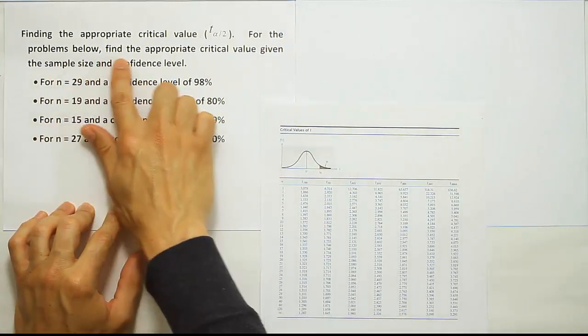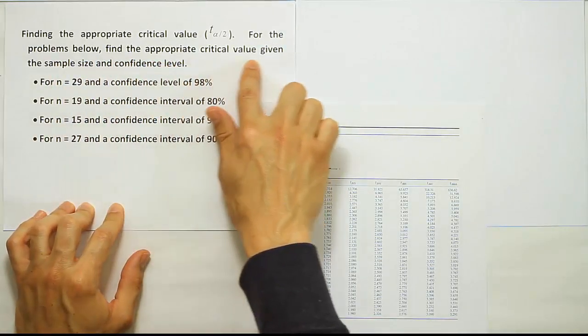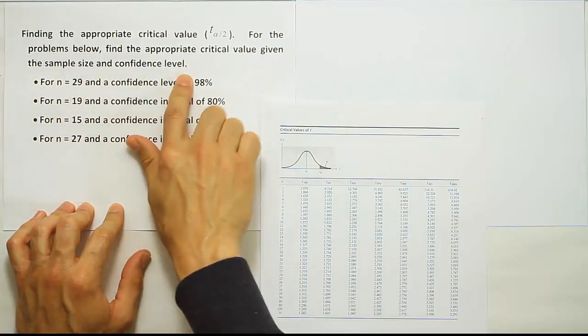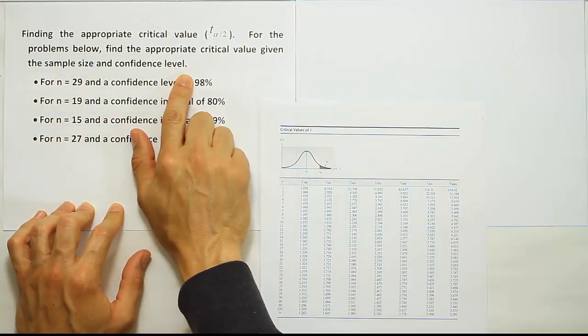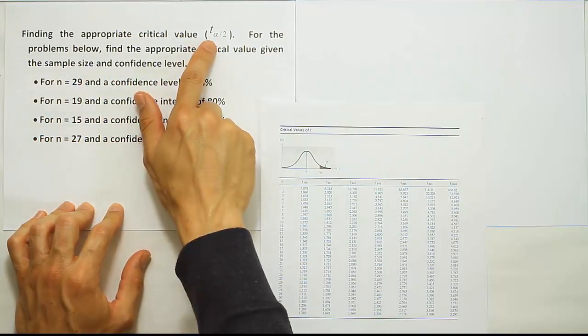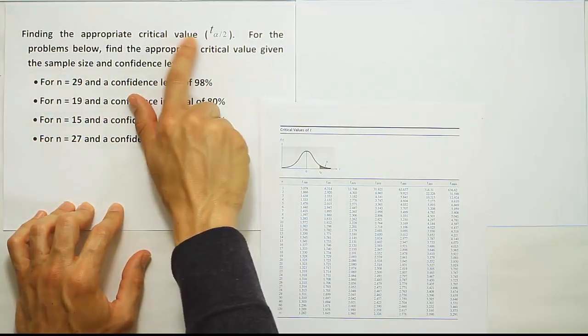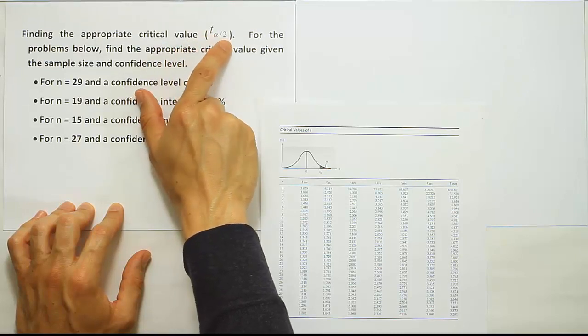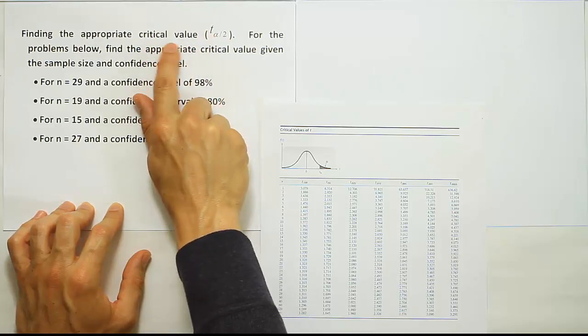For the problems below, find the appropriate critical value given the sample size and confidence level. We're looking for T critical values — specifically T alpha divided by two critical values.